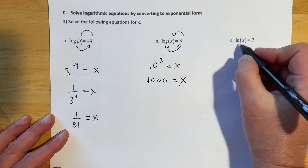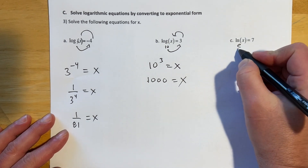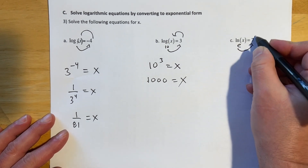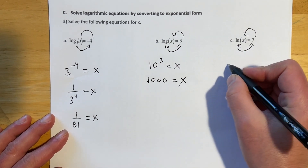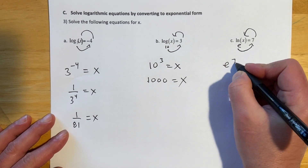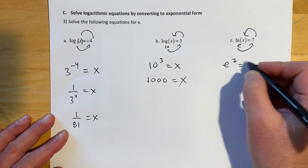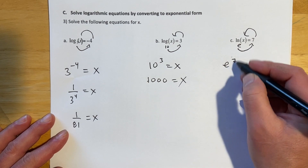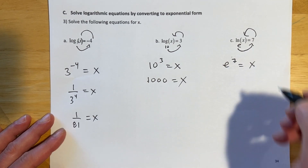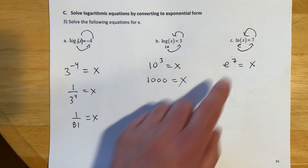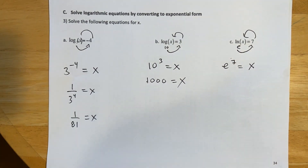For the natural log equation, the invisible e gives e^7 = x. This one just wants the exact solution, so e^7 is what you put as your answer.